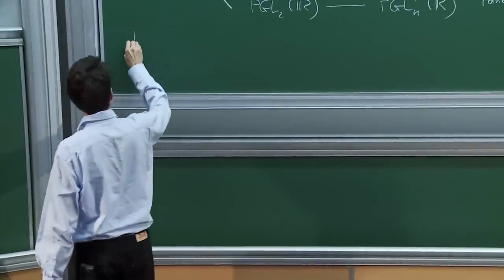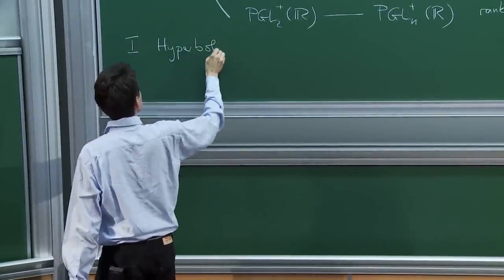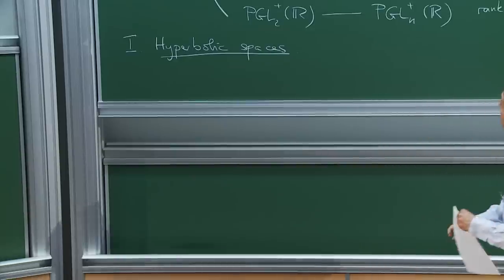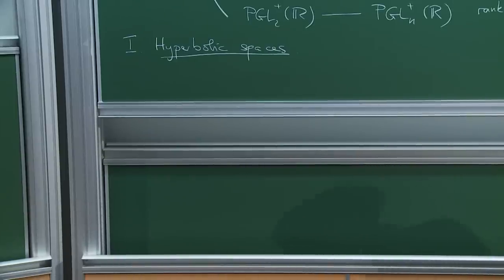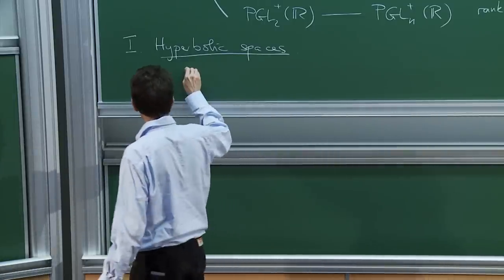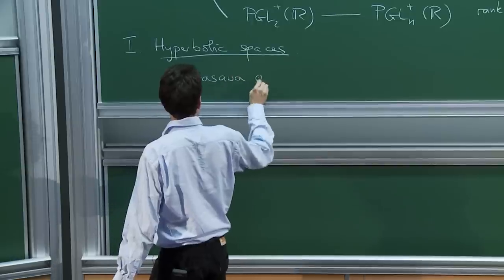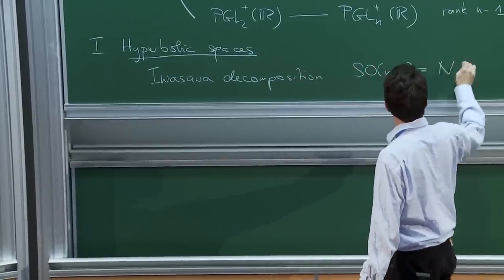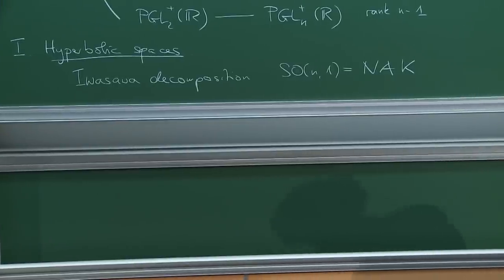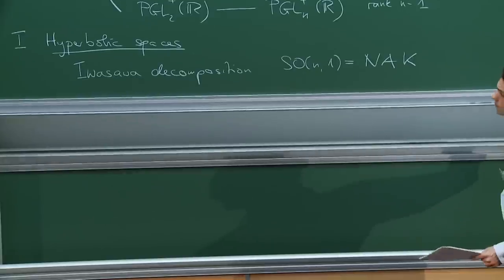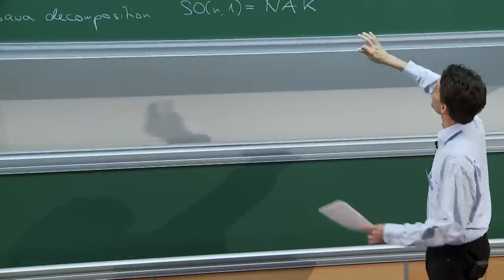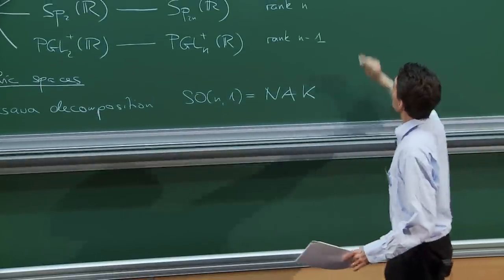Let me start with hyperbolic spaces. We are interested in automorphic forms on SON1, and to get started we need some coordinates. So we start with the Iwasawa decomposition of SON1. Abstractly, it's a product of three groups N, A, and K. I'm just trying to figure out how to organize the blackboards appropriately — perhaps I'll just continue here.